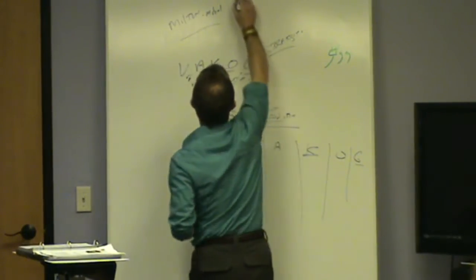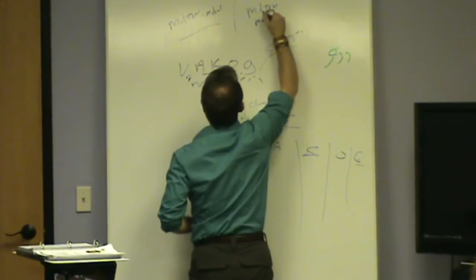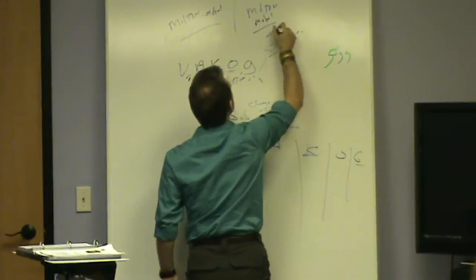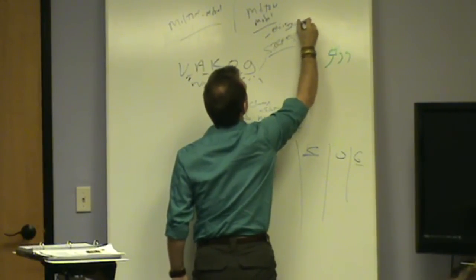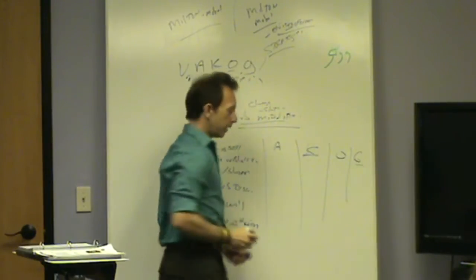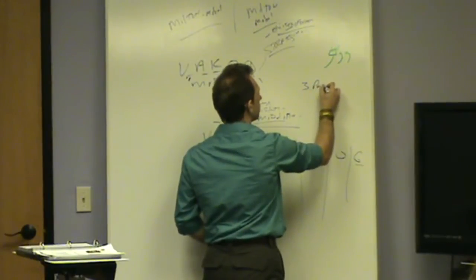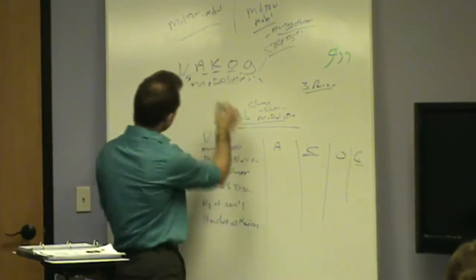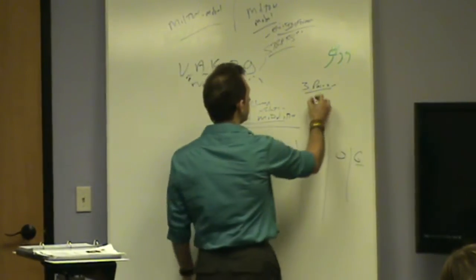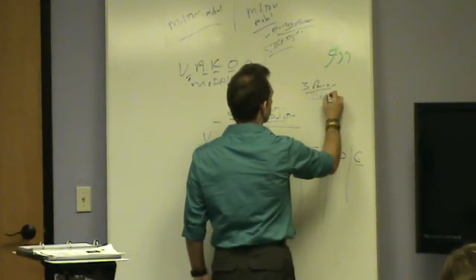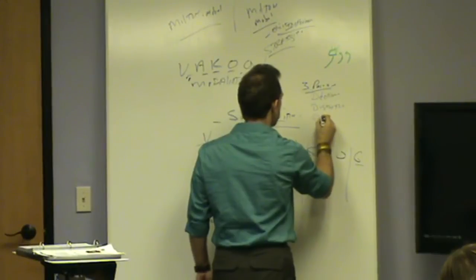Using another process called the Meta Model, we learn to elicit information. Because there's three basic processes that all human beings go through as they're creating their internal experience: deletions, distortions, and generalizations.